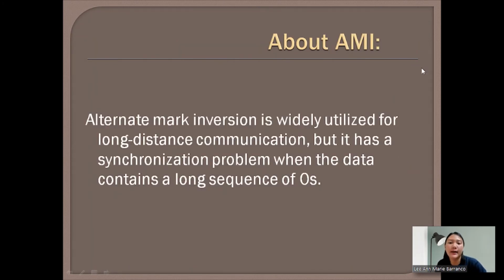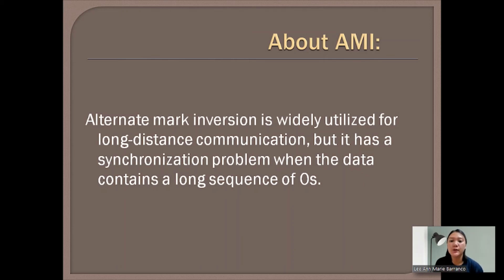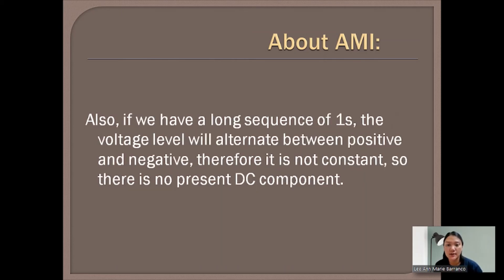Alternate Mark Inversion is widely utilized for long-distance communication, but it has a synchronization problem when the data contains a long sequence of zeros. Also, if we have a long sequence of ones, the voltage level alternates between positive and negative, so it is not constant — therefore, there is no DC component present.